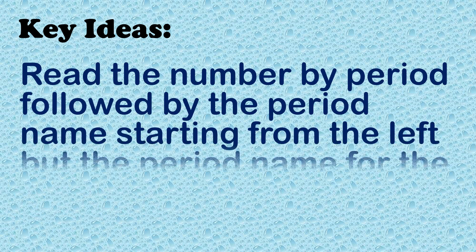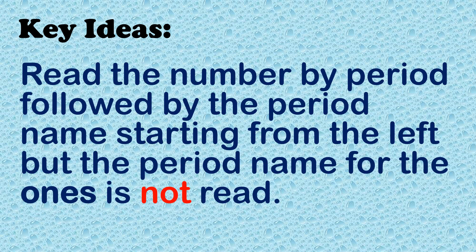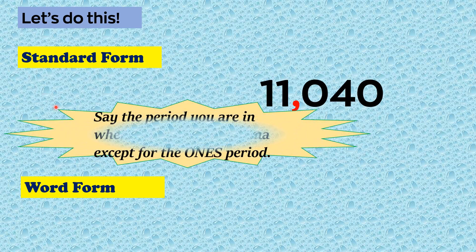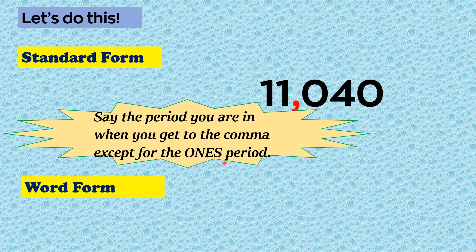Key Ideas to Remember: Read the number by period, followed by the period name, starting from the left — but the period name for the ones is not read. Say the period you are in when you get to the comma, except for the ones period.